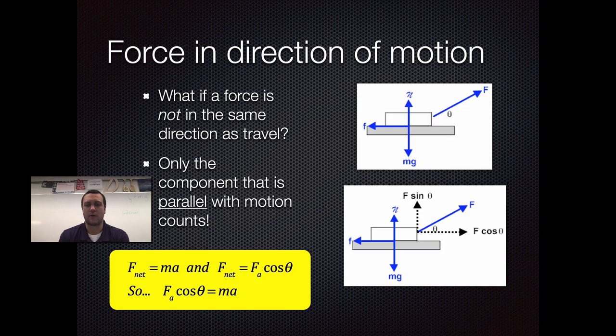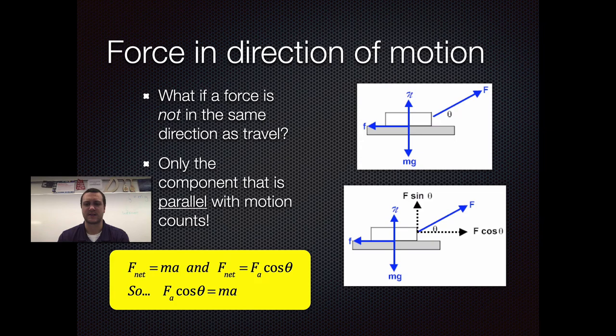When we go about finding our net forces, if we're given an angle, the only force that is going to count is the force that is parallel with our motion. This goes back to the two-dimensional motion concept — perpendicular components are independent of one another. If you get a force at an angle, the result of that force is going to be its components, just like we saw in two-dimensional motion: a vertical component and a horizontal component of our force.